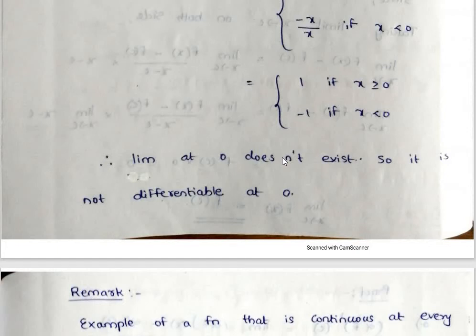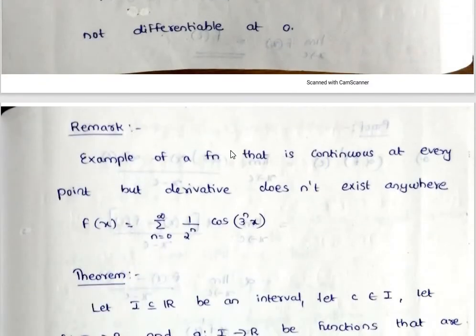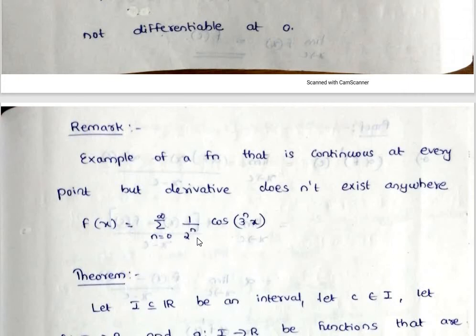Next, you will learn the example of a function that is continuous at every point but whose derivative does not exist anywhere. That function is f(x) = the sum from n = 0 to infinity of (1/2)^n × cos(3^n × x).